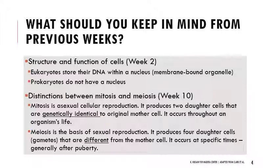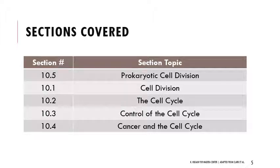Some things I want you to keep in mind from previous weeks: ideas about the structure and function of cells, specifically the distinction between eukaryotes and prokaryotes, and whether they have a nucleus to store their DNA. Also, last week we talked about distinctions between mitosis and meiosis — keep that in mind; even though they're both cell division, they're separate processes. We'll start with prokaryotic cell division, then get into cell division terminology, the cell cycle, how the cell cycle is regulated, and then how that ties into cancer.